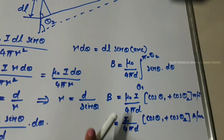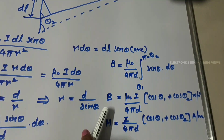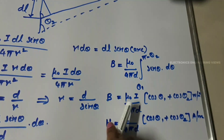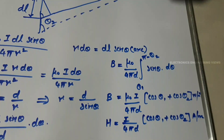Because we know the relation between magnetic flux density and magnetic field intensity: B is equal to μ · H. So the H equation becomes I divided by 4π · d multiplied by (cosθ₁ + cosθ₂). In this equation, μ₀ is not used.